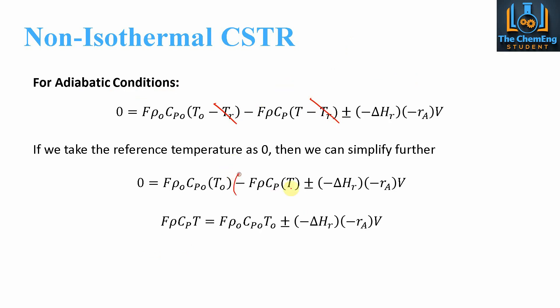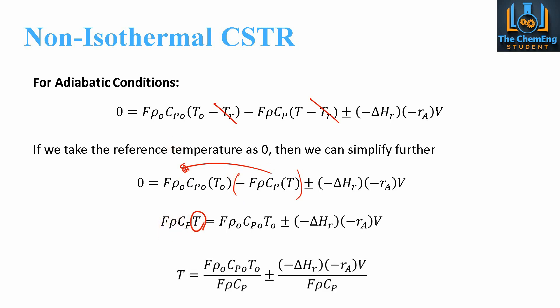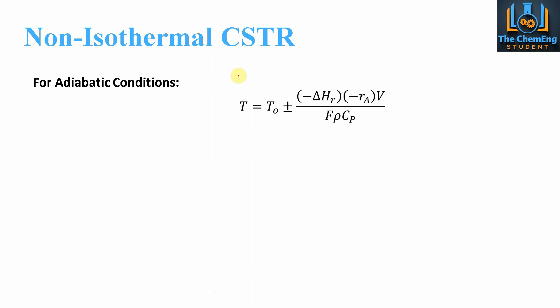We bring the outlet term across to make it positive, since we want to know the final temperature relative to the initial temperature, and we need to isolate T. We divide both terms by F·ρ·Cp. We can also assume that the physical properties of the system are constant — so ρ0 = ρ and Cp0 = Cp — and these cancel out, leaving us with the simplified energy balance equation.